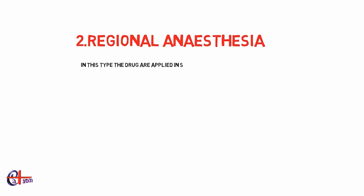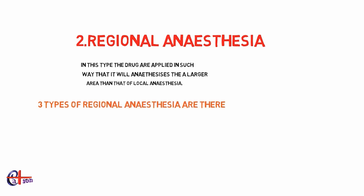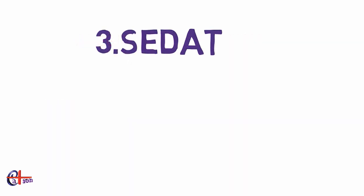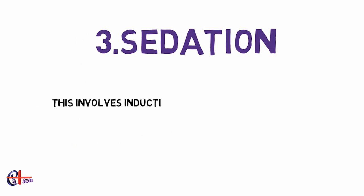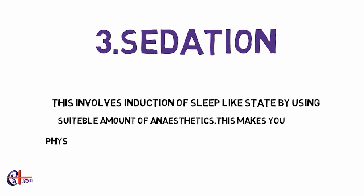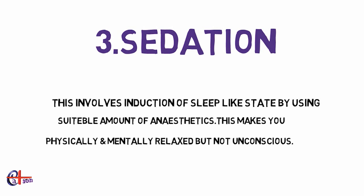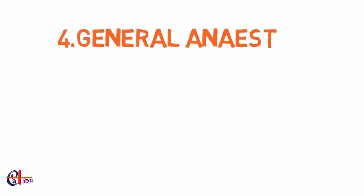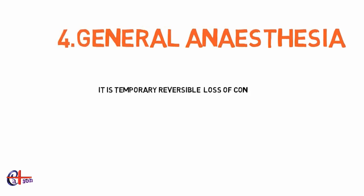Regional anesthesia is almost the same as local anesthesia, except it deals with a larger area, achieved by the same mechanism. It is further classified into three types: spinal anesthesia, epidural anesthesia, and nerve block. Sedation involves induction of a sleep-like state using a suitable amount of anesthetics, making you physically and mentally relaxed but not unconscious.